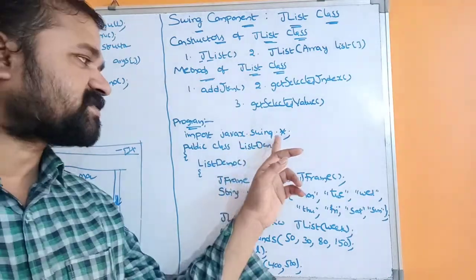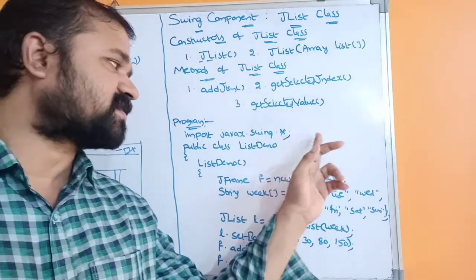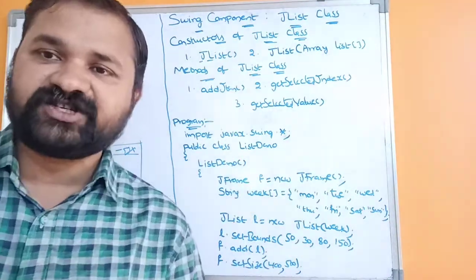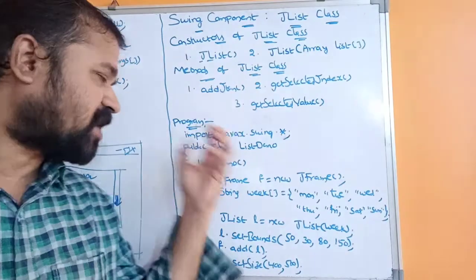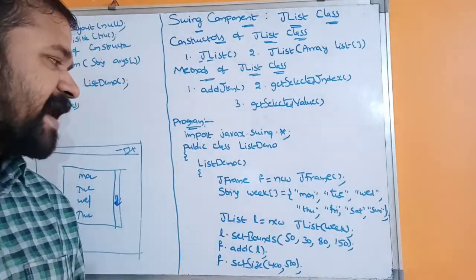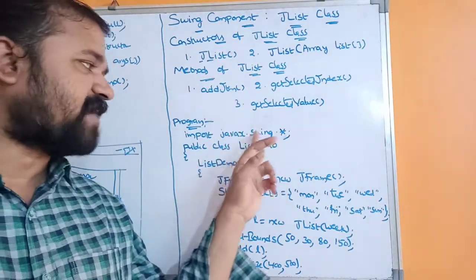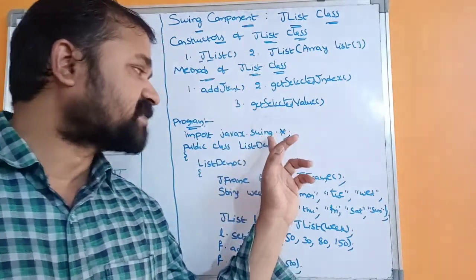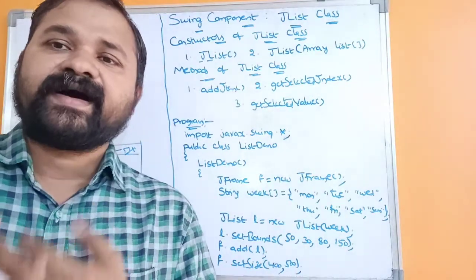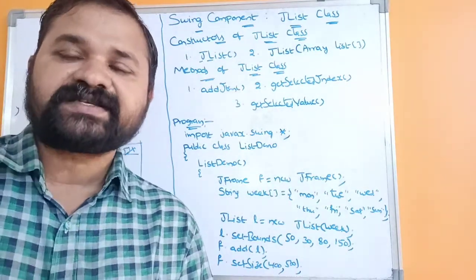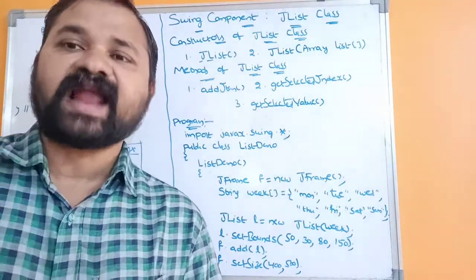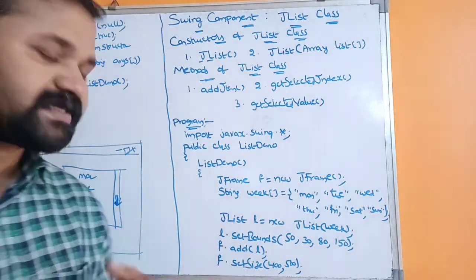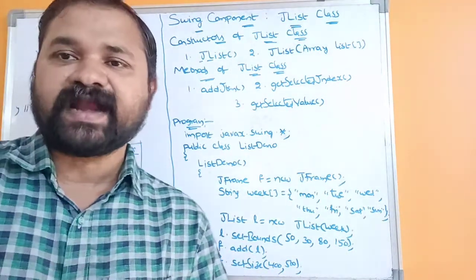Now let's see the program. Import javax.swing.*; — here 'x' stands for extension, so javax is the parent package. In this package we have a sub-package called swing. The swing sub-package contains several classes like JFrame class and JList class.